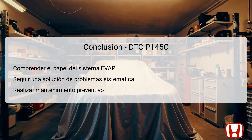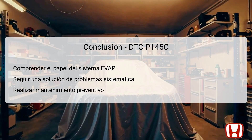In conclusion, DTC P145C represents an EVAP system purge flow malfunction, which is pivotal in maintaining vehicle emission standards. Understanding the roles of the EVAP components helps in diagnosing potential issues effectively. Following a systematic troubleshooting approach based on the DTCs associated with the problem ensures that all underlying causes are addressed. Additionally, preventive maintenance is crucial for longevity and performance, helping to minimize risks of future DTCs. With careful attention to the system and its components, drivers can ensure their Honda CR-V operates optimally while adhering to emissions regulations, empowering vehicle owners to take informed actions regarding any EVAP-related issues.